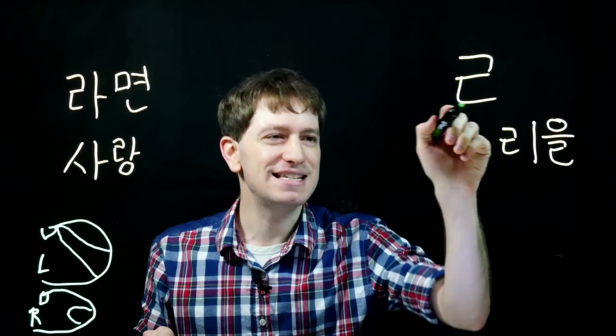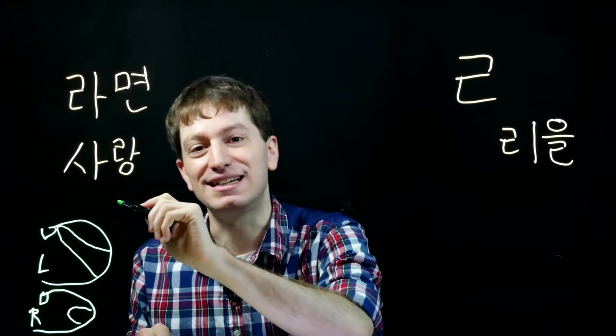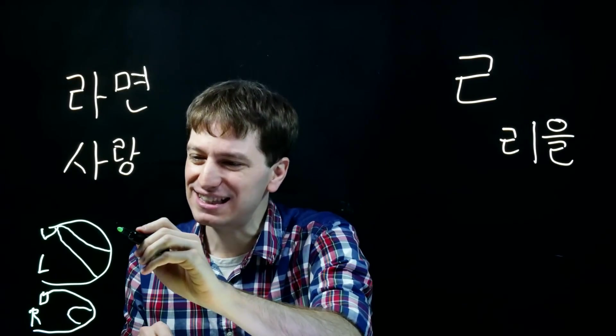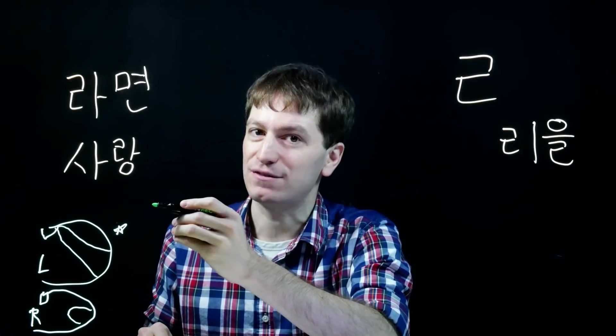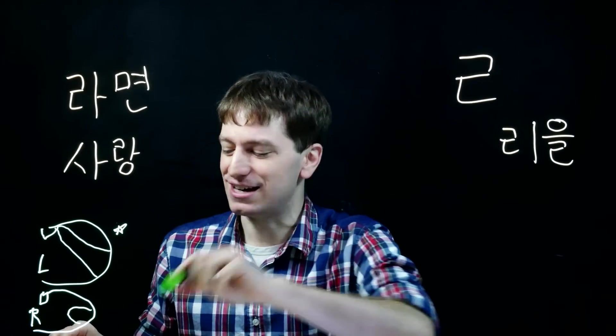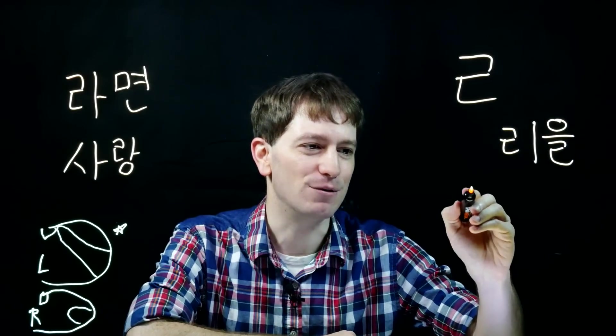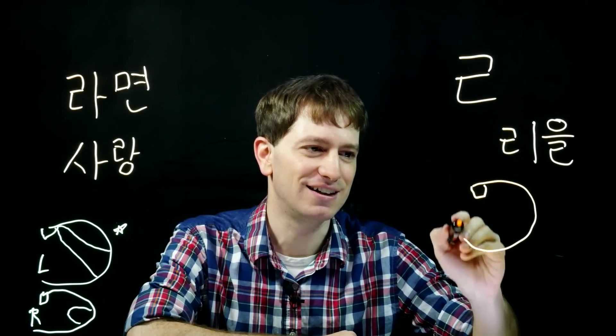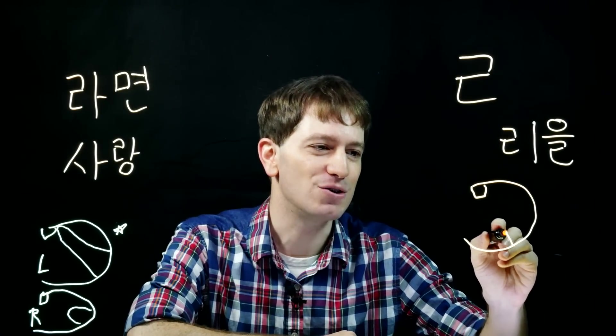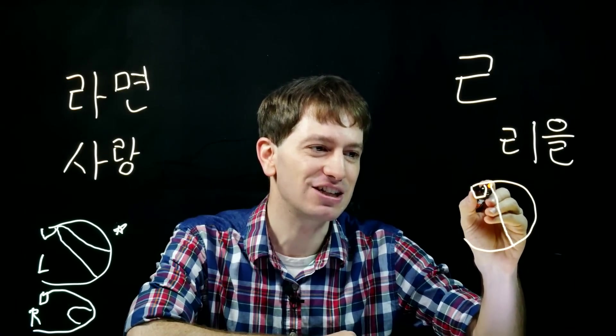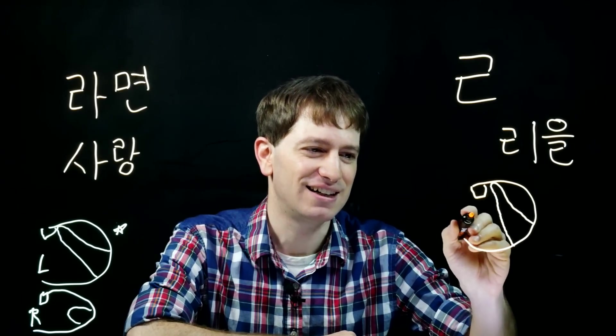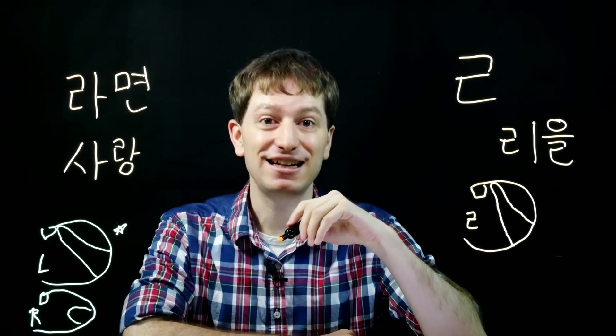And in Korean though, this letter is made using neither of these, although it is a little bit closer to the L if we have to pick one. So here is how this letter is made in Korean. You have your mouth, your teeth here, and the tongue goes behind the teeth, but not touching them, kind of up in this area. This is how you make the L sound.